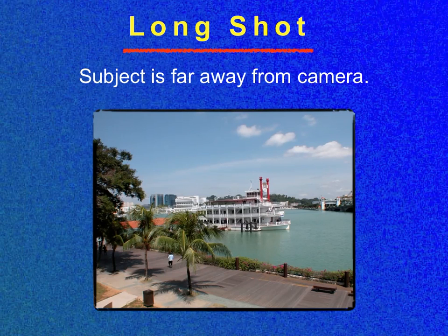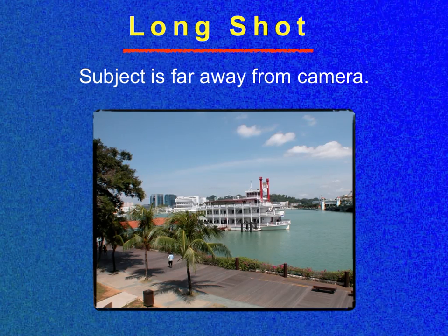This is a long shot — the subject is far away from the camera. The subject is the boat. In long shots, it usually helps to have something in the foreground that frames what's in the background. The foreground is the palm trees and the walkway, the background is the sky and the building, and the mid-ground is the boat, which is really my subject.